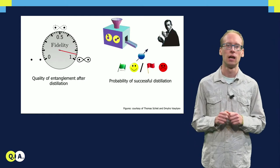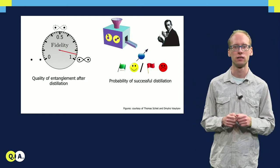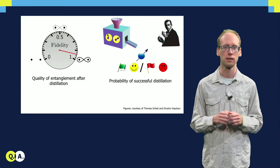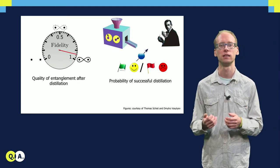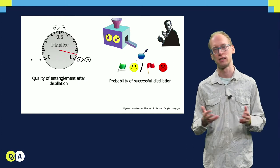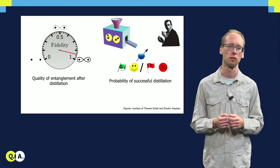However, any practical entanglement distillation procedure is normally probabilistic, which means that there is only a finite probability that the resulting state that Alice and Bob obtain is more entangled than the input copies.